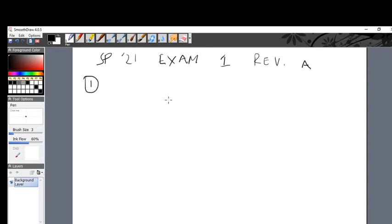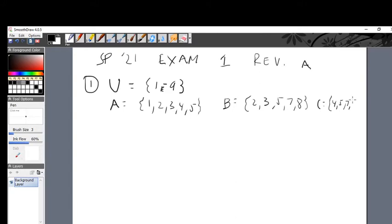Problem number one. This is as follows. It starts up with, there's a lot of set problems in this review. Universal set is one to nine. When you put it on your paper, maybe you should just go one, two, three, four, five, six, seven, eight, nine, but I'm saving a little bit of time. The set A is equal to one, two, three, four, five. One to nine inclusive, including one, including nine.